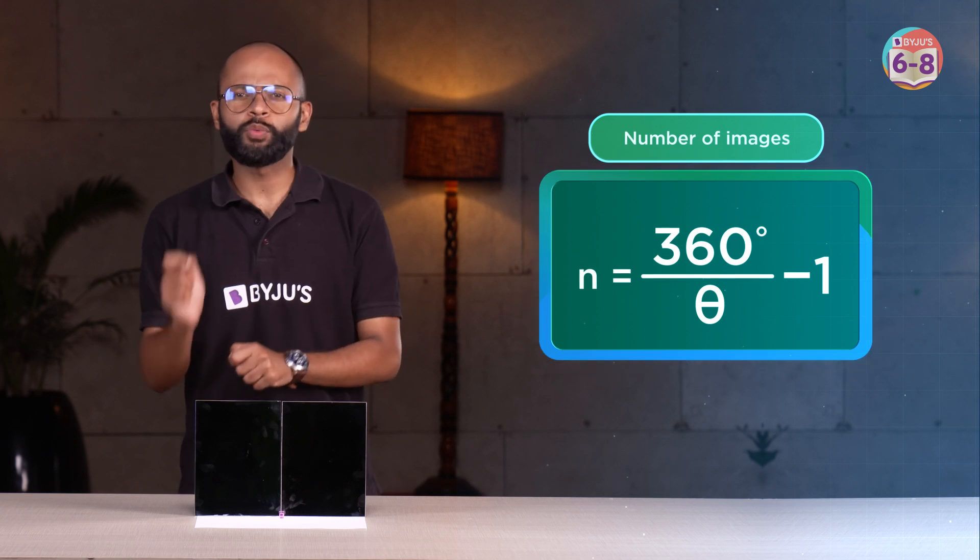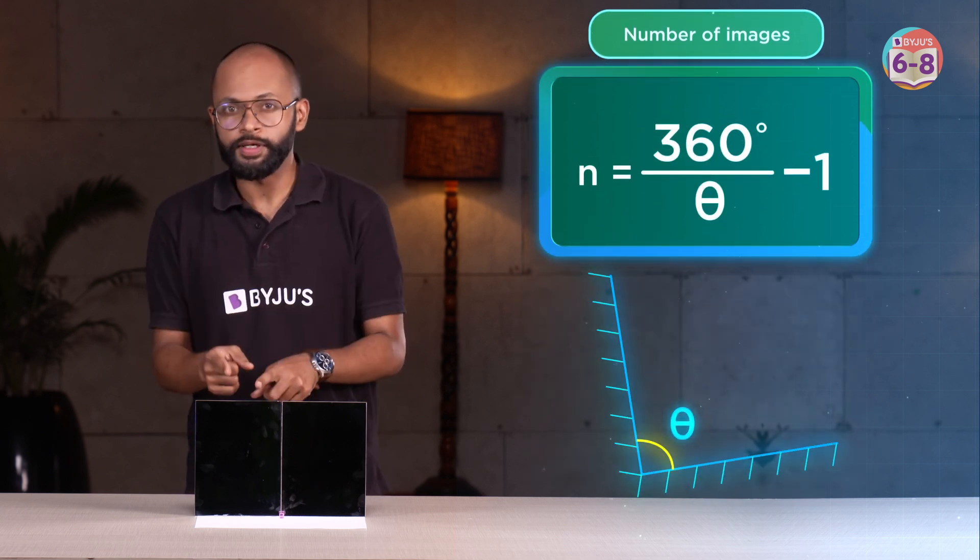Let me show you the magic of multiple reflections and prove its physics. The formula is simple, it says 360 by theta minus 1, where theta is the angle between the two mirrors.